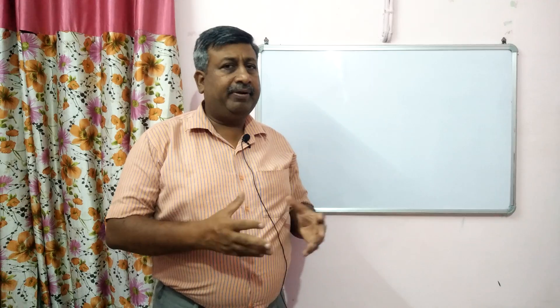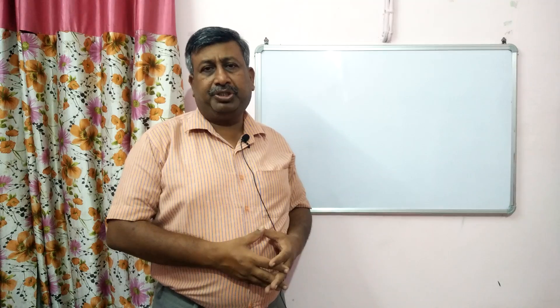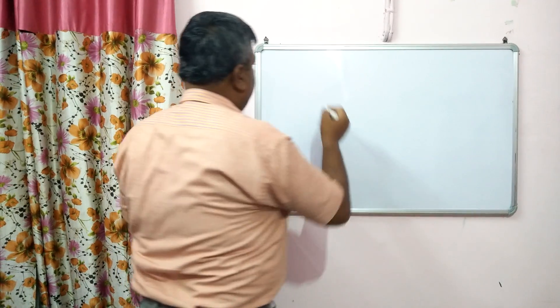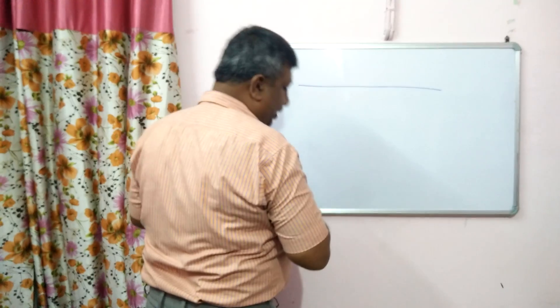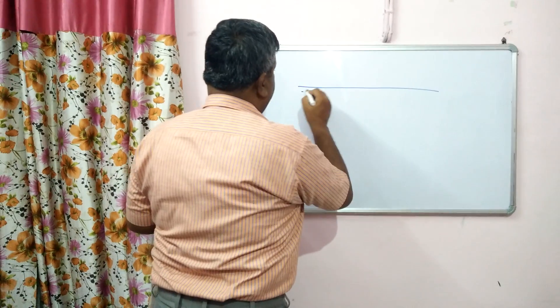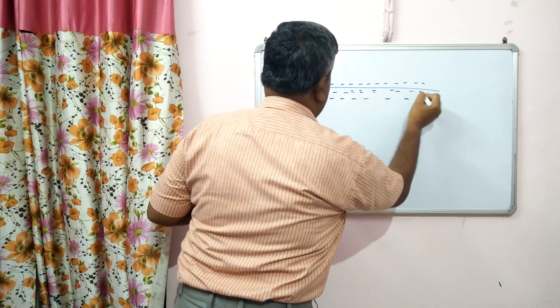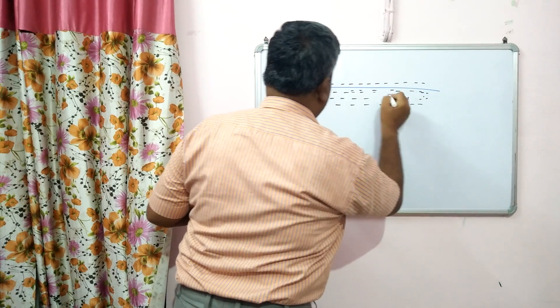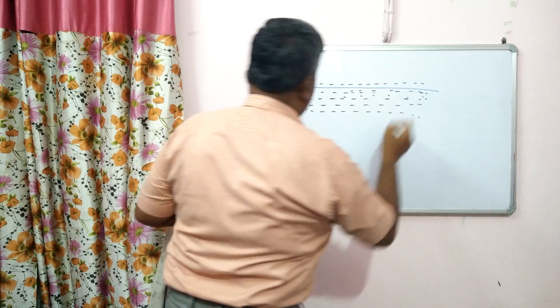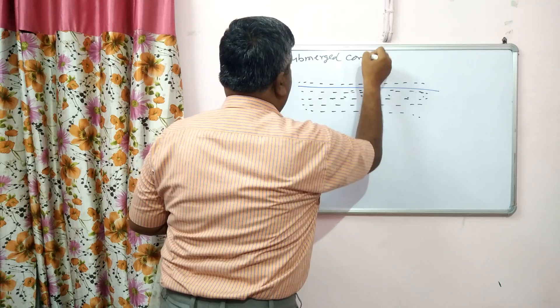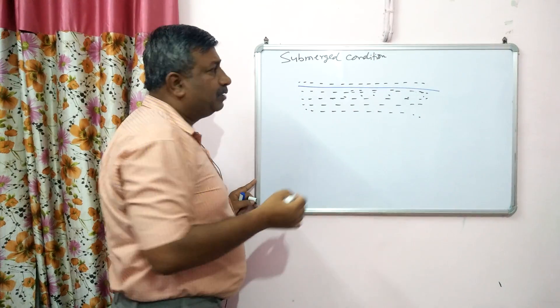But under submerged conditions, particularly in rice fields when there is puddled rice or waterlogged condition, nitrogen transformation is entirely different from upland condition. In this submerged condition, water is present on and within the soil surface — all pores are filled with water. This condition is very common in the case of transplanted rice.